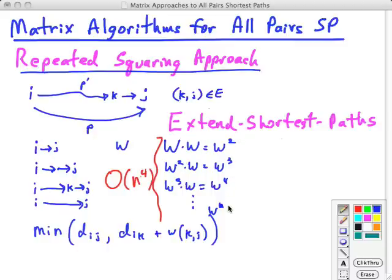Instead of doing it this way, we can use the fact that matrix multiplication is associative. After we've done W times W is W squared, instead of multiplying it just by W again, we can say, well, let's multiply W squared times W squared, and then that gives you W to the fourth. And if you do W fourth times W to the fourth, that gives you W to the eighth, and so on.